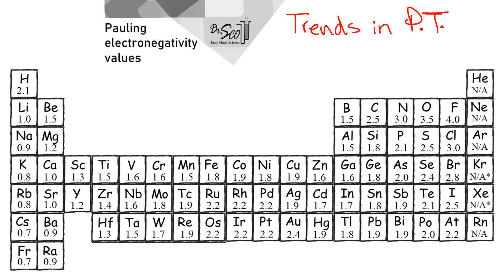Moving through the main blocks and ignoring the D block transition elements, going through what we call the period — the rows — you can see the trend: it goes from 1.0 up to 4, then resets at 0.9 up to 3, then 0.8 up to 2.8, and so on. There is also a trend in the groups — the columns. Going from bottom to top, electronegativity increases. When you're not talking about transition elements, the behavior of these trends is actually quite good.